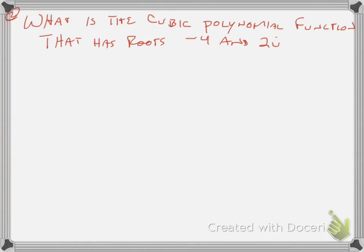So here for this next part of it, it's asking me, what is the cubic polynomial function that has roots negative 4 and 2i? Well, because it's a cubic, that gives you a clue. Because it's a cubic, the degree is 3. That means it's going to have 3 total roots.